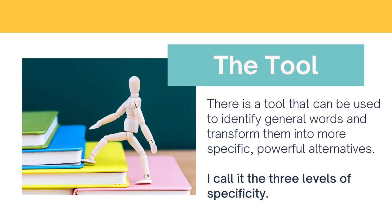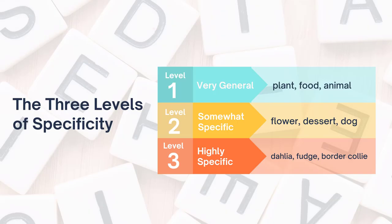The tool for this is one that can be used to identify these general words, and I call it the three levels of specificity. The first level is very general — words like plant, food, and animal. Level two is somewhat specific, it's in the middle. And level three is much more specific — words like dahlia, fudge, and border collie.